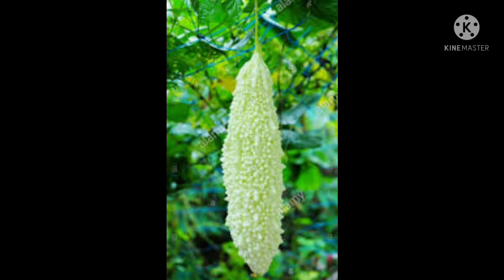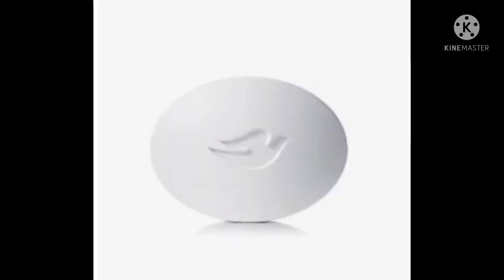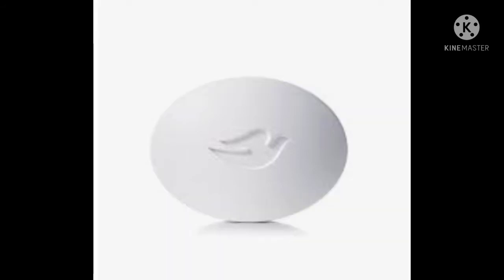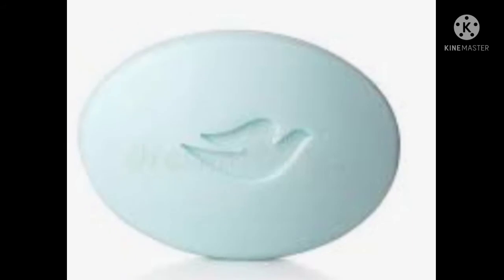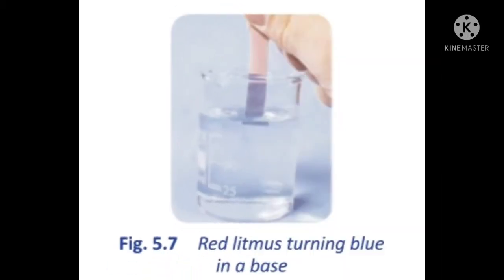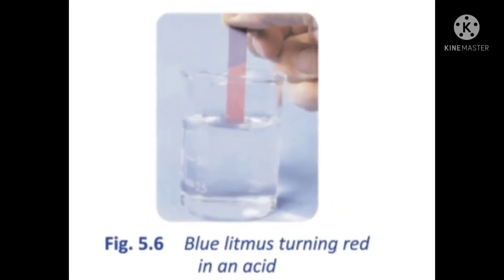About uses of bases: calcium hydroxide, also called slaked lime, is used to neutralize acidity in soils. It is an ingredient in whitewash and mortar. It is also a component of the Bordeaux mixture used for protecting agricultural crops from pests, and used in the preparation of dry mixes for painting and decorating. Magnesium hydroxide, called milk of magnesia, is used as an antacid or laxative and helps correct excess acidity in the stomach.